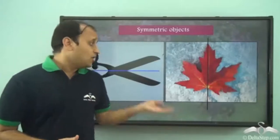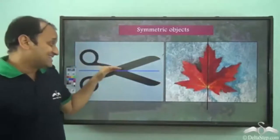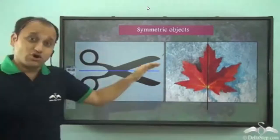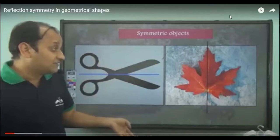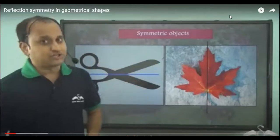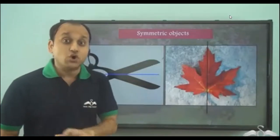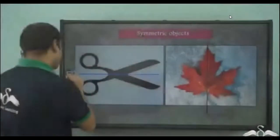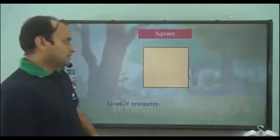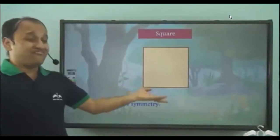We have learned what symmetric objects are. Both these objects show reflection symmetry — a line divides these objects into two mirror halves. Both halves are mirror images of each other. Not only objects, but even geometrical shapes show reflection symmetry. Let's look at a few of them.